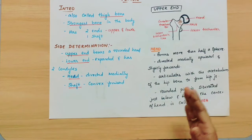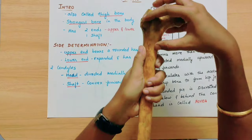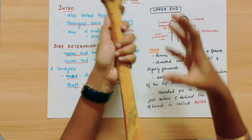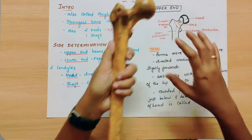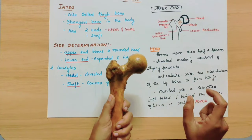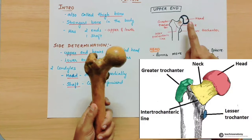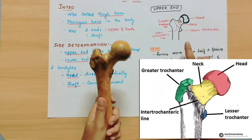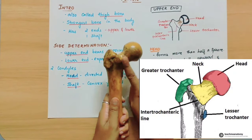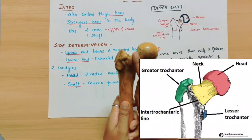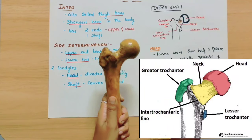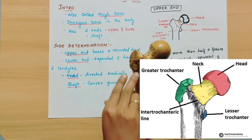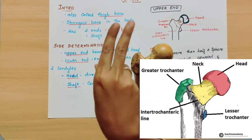Now coming to the upper end. So this is the upper end — upper end, shaft, and lower end. In the upper end there are 6 parts. The first is the head. This is the head of the femur. The next is the neck. This is the neck of the femur. The third is the greater trochanter, which is an extra bony growth located on top.